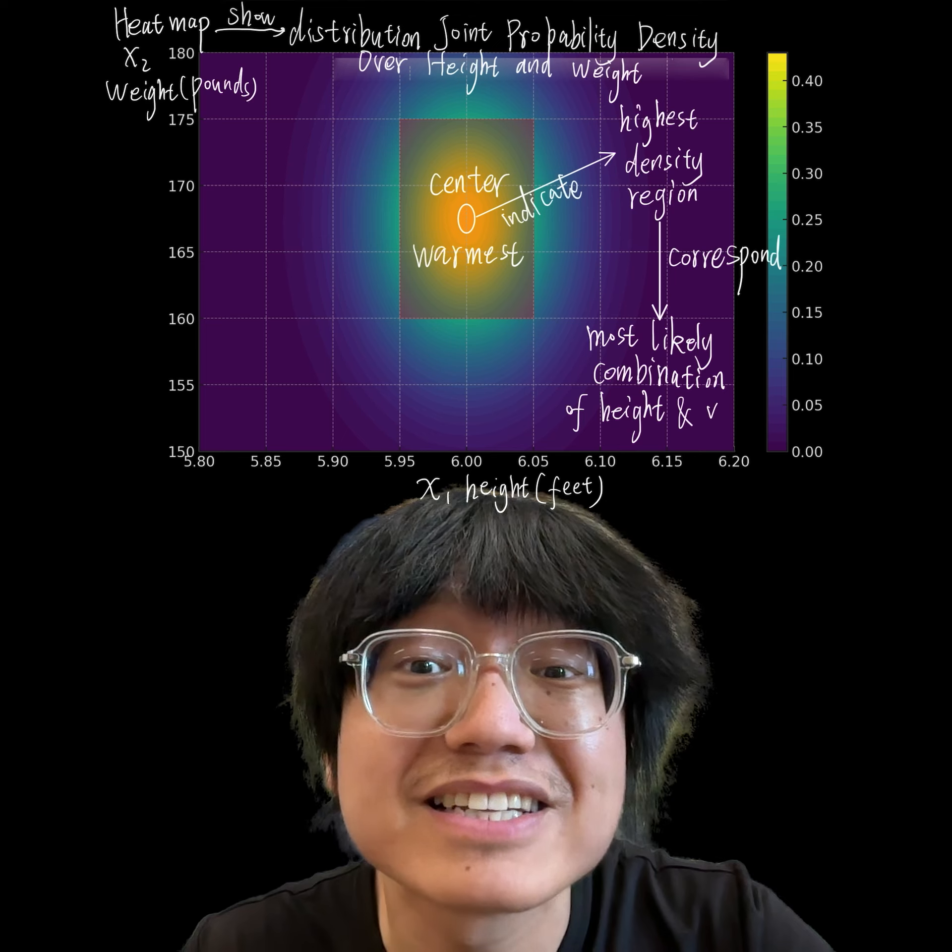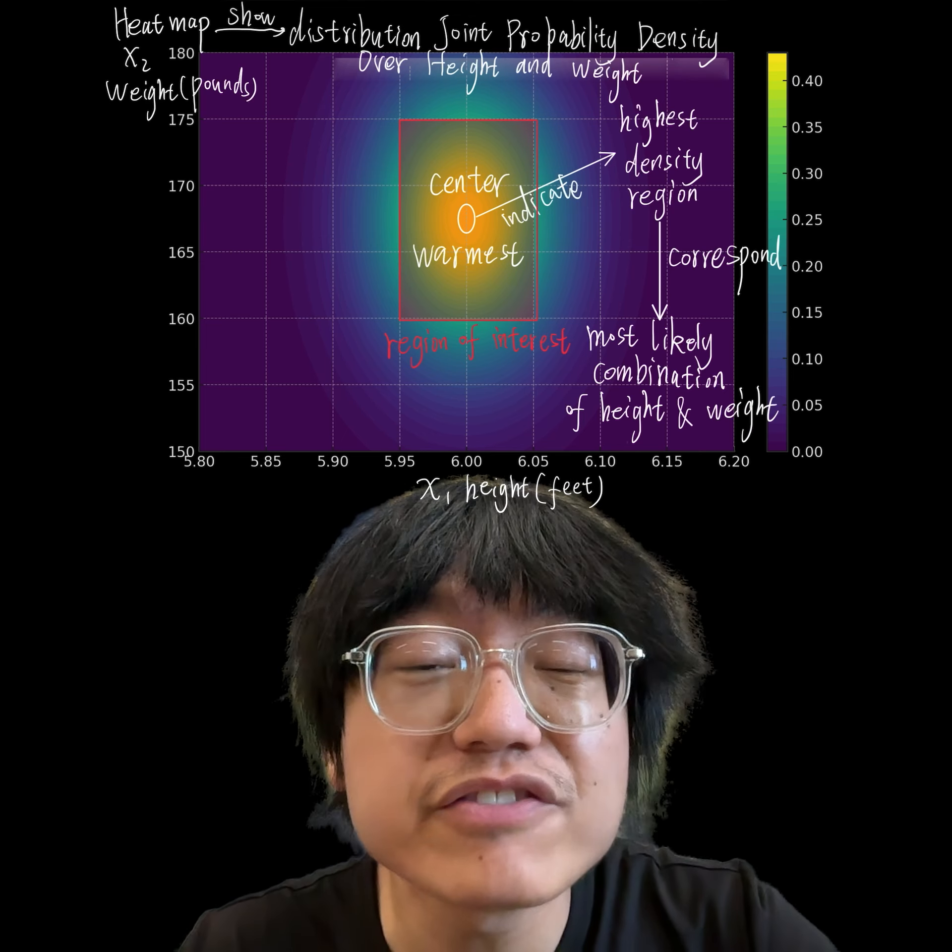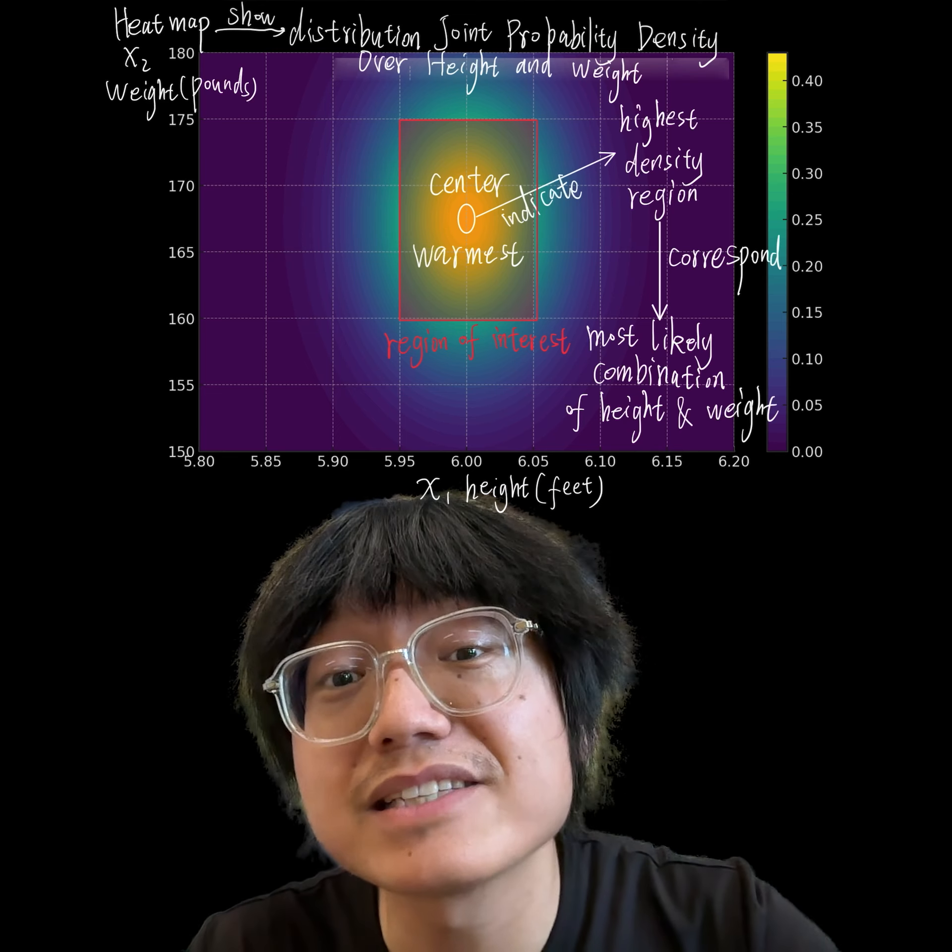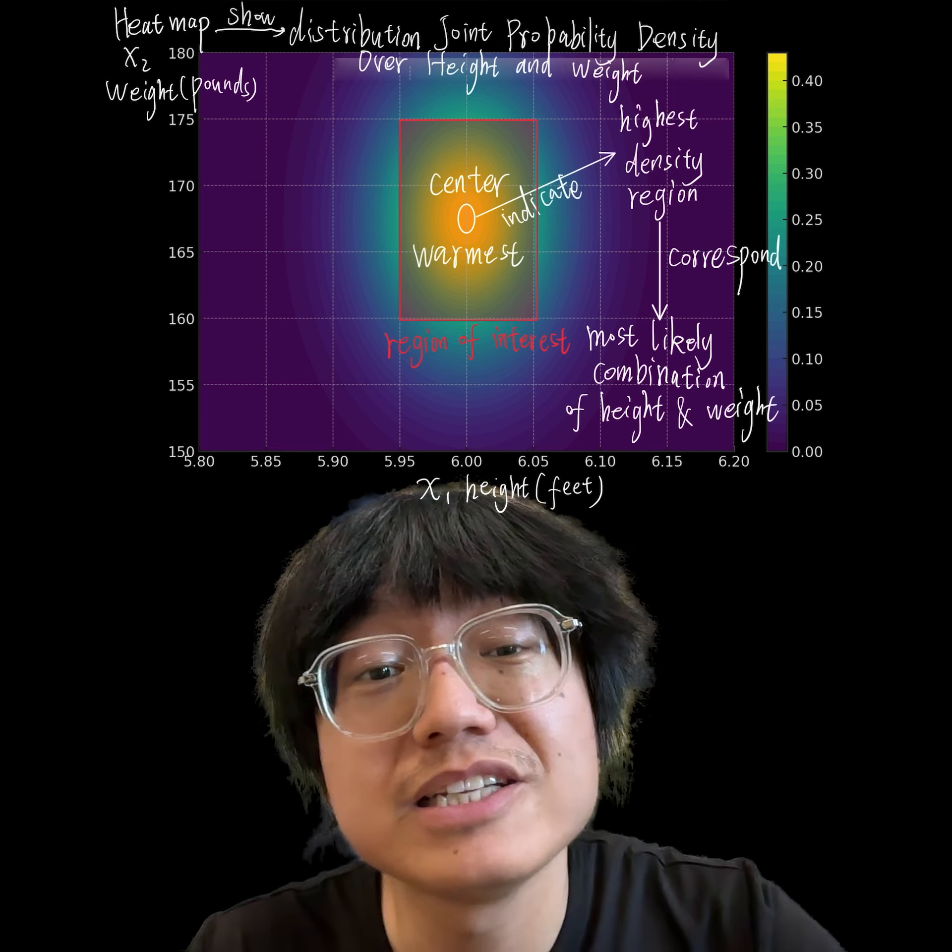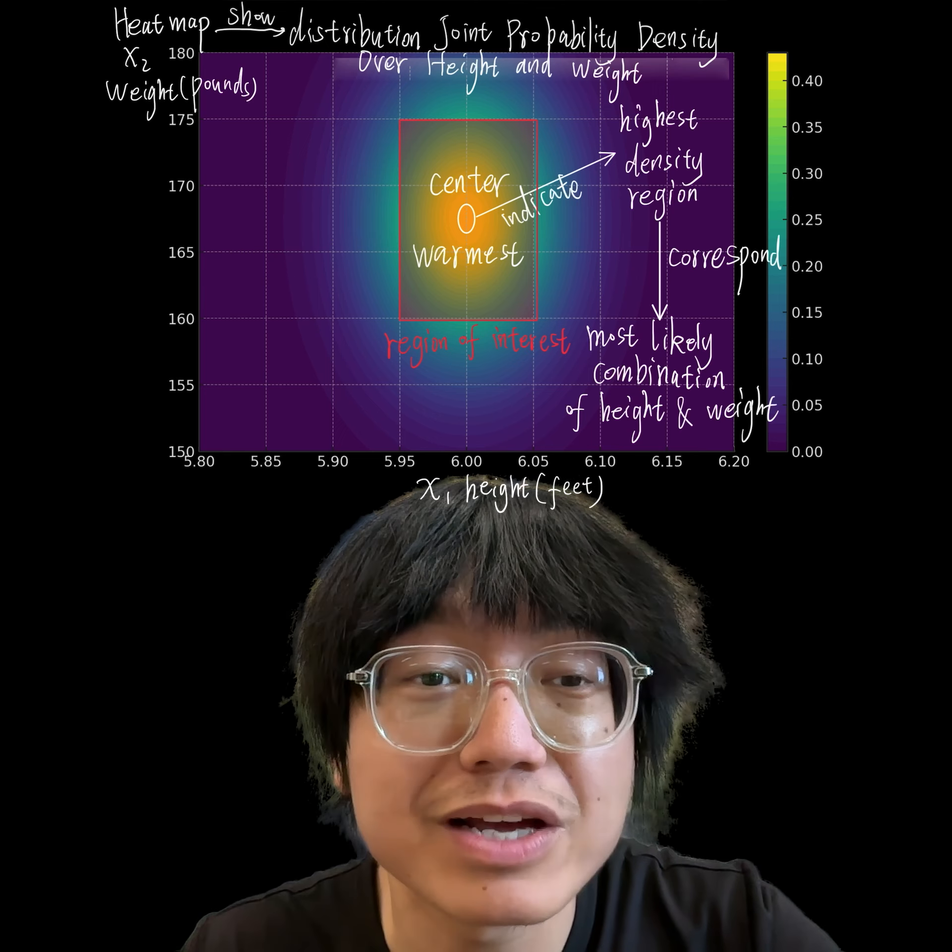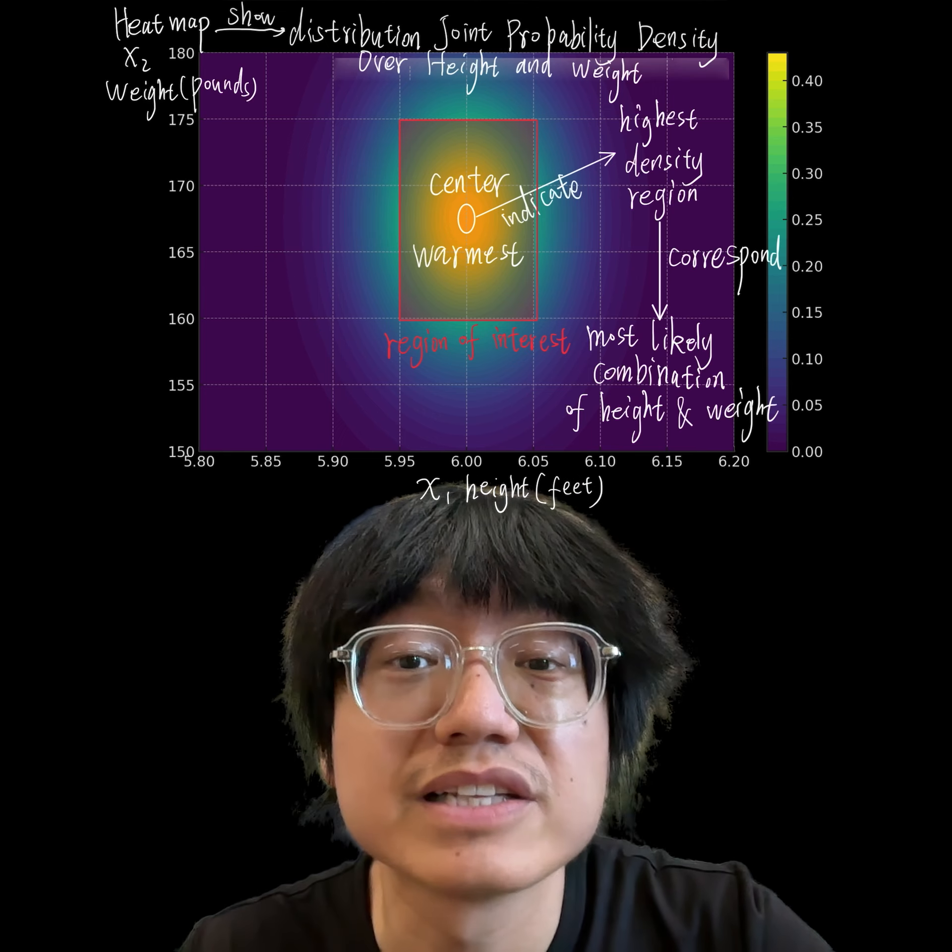The target region, the highlighted rectangle, marks the region of interest where the height is between 5.95 and 6.05 feet, and the weight is between 160 and 175 pounds. The probability of a randomly selected individual falling into this range is the integral of the density over this rectangle.